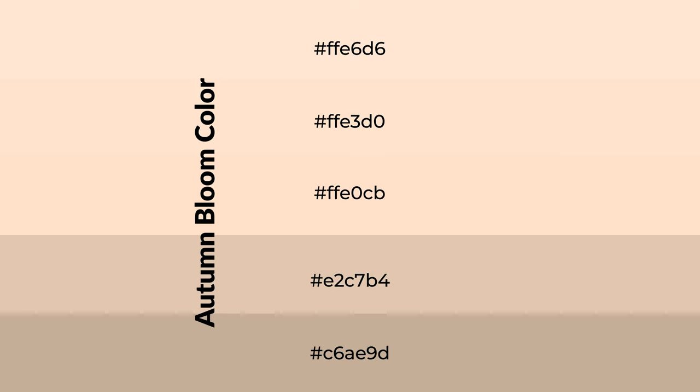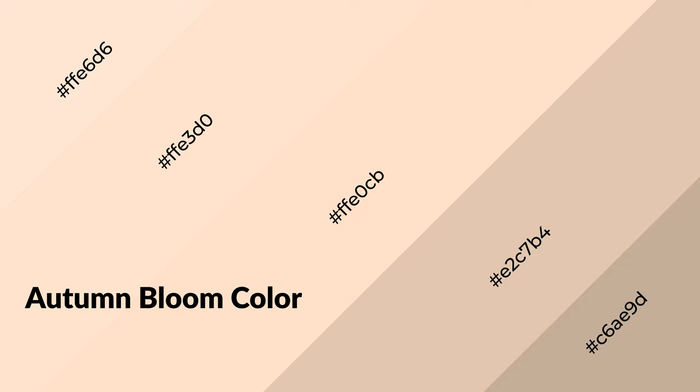To generate shades of a color, we add black to the color, and it is used in patterns and 3D effects. Layers and shades create depth and drama. Autumn bloom is a warm color and it emits cozier and active emotions.